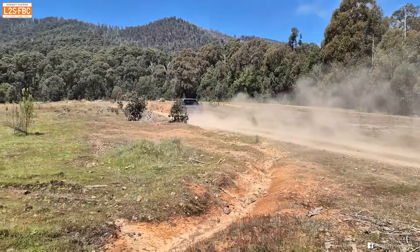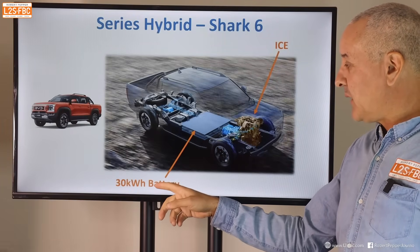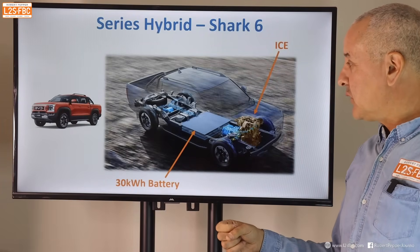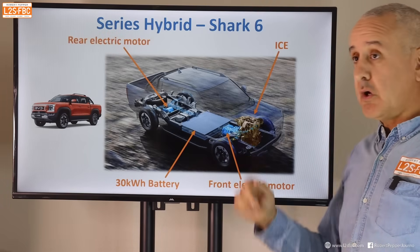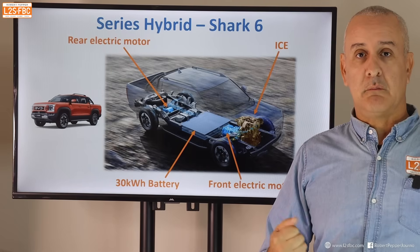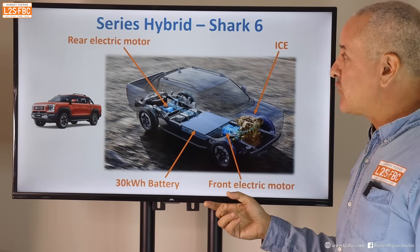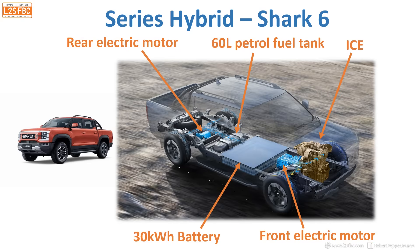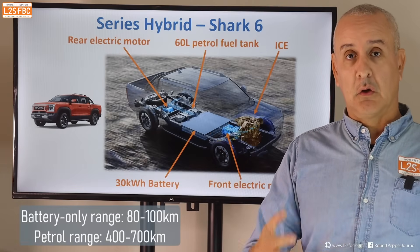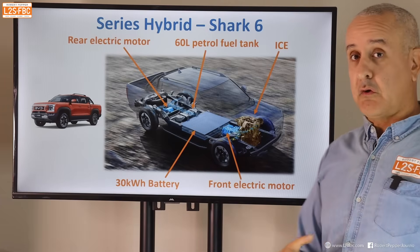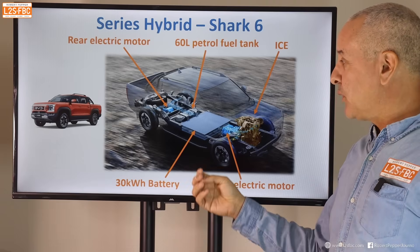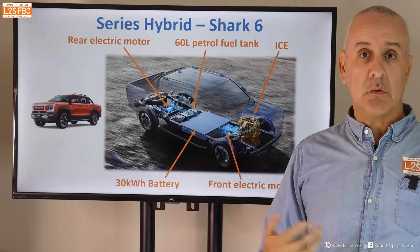In contrast, this is the BYD Shark — a series hybrid. It has a smallish petrol engine, a large 30 kilowatt-hour battery pack mounted low and central, an electric motor at the front, and one at the back, coordinated by software. It also has a 60-litre fuel tank. Interestingly, that 60-litre tank is much physically smaller than the 30 kWh battery, yet will take you a long way — which highlights the energy density limitations of battery electric vehicles.